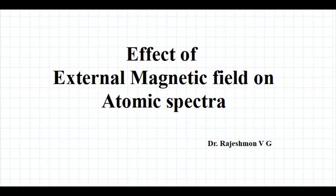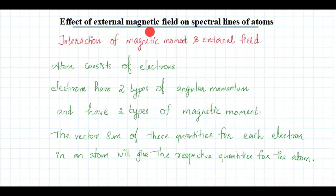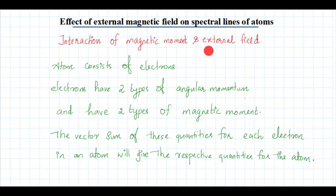This lecture is about the effect of external magnetic field on atomic spectra. The topic is the effect of external magnetic field on spectral lines of atoms. We are going to study the interaction of magnetic moment and external magnetic field. Before going into the details, I will give you a few fundamental concepts.